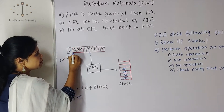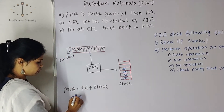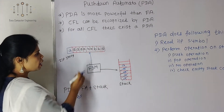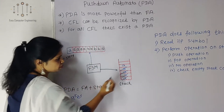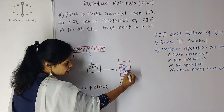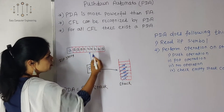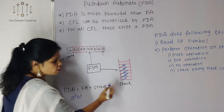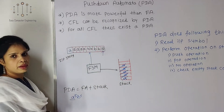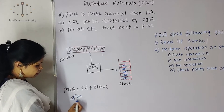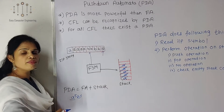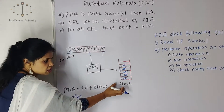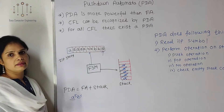Now consider the string A⁵ B⁴. For every A we push all letters into the stack, then for every B we pop one by one — popping 4 A's. We reach the end of the string, but one more A is still present in the stack. That means this string is rejected, as it does not follow the Aⁿ Bⁿ context-free language. Rejected because A remains in the stack.